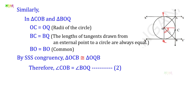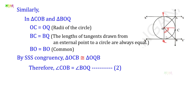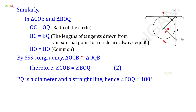Now, PQ is a diameter, which is a straight line, so angle POQ equals 180 degrees. Since P, O, Q lie on a straight line, the four angles POA, AOC, COB, and BOQ together equal 180 degrees. So we write: angle POA + angle AOC + angle COB + angle BOQ is equal to 180 degrees.